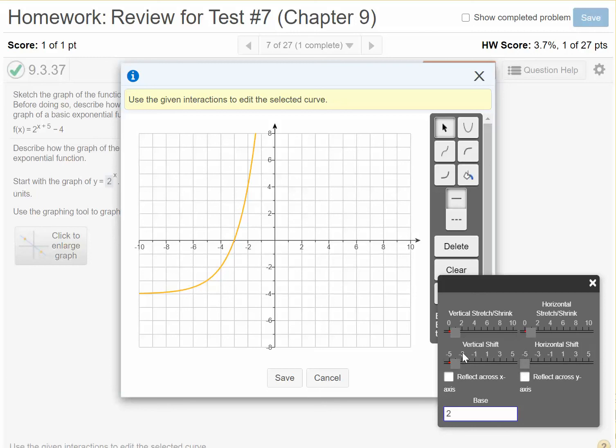And so now we've got the correct graph. Notice it's not asking us to put in the asymptote, but it would be at y equals negative 4. And normally, you would put that on your own paper.